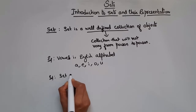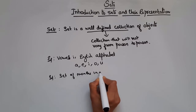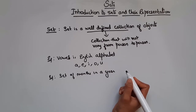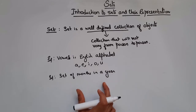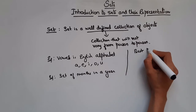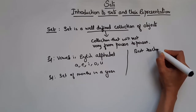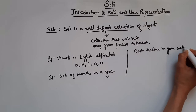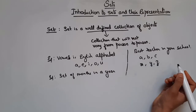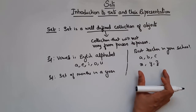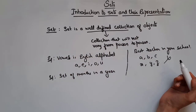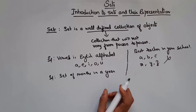Another example: set of months in a year. We all know the months — January, February, March, April, May, June, July, August, September, October, November, December — so this collection will not vary from person to person. On the other hand, if I say 'best teacher in your school,' one student may say ABC is the best teacher, another may say XYZ is the best teacher. So here the collection varies from person to person, and therefore this is not a well-defined collection.